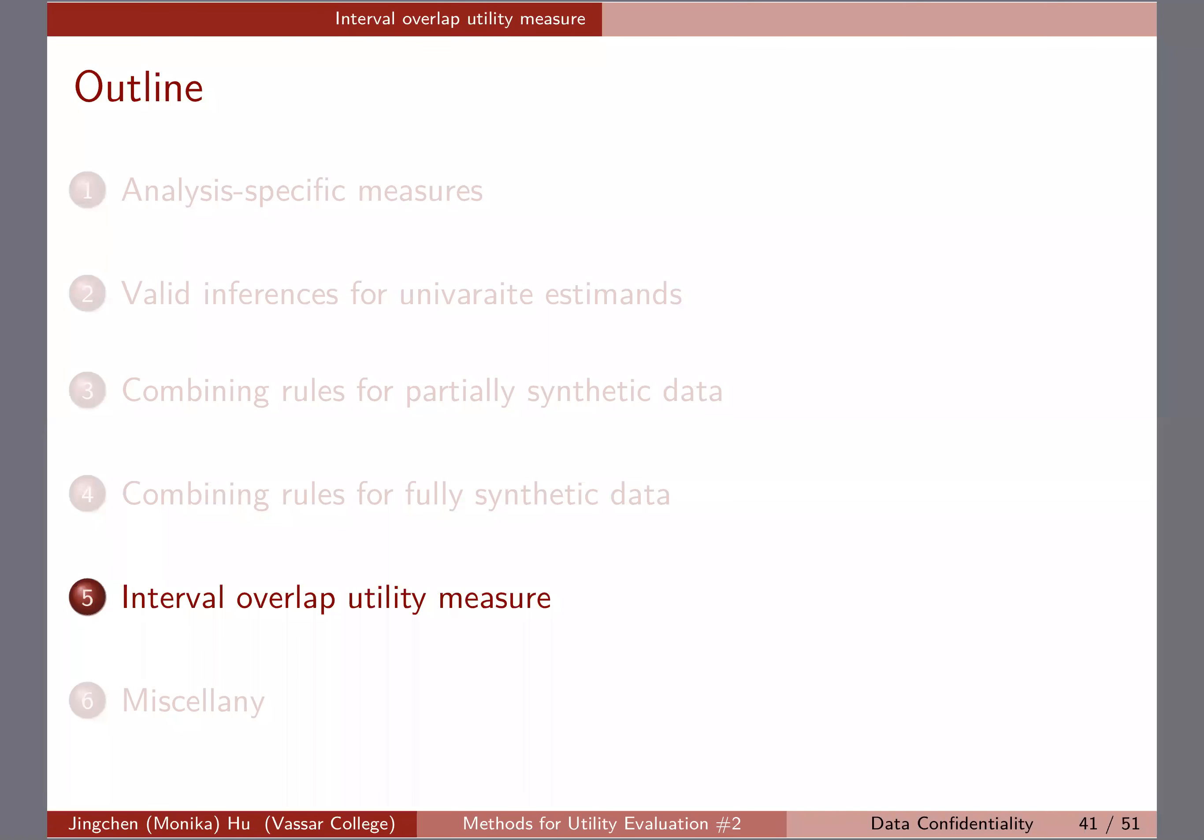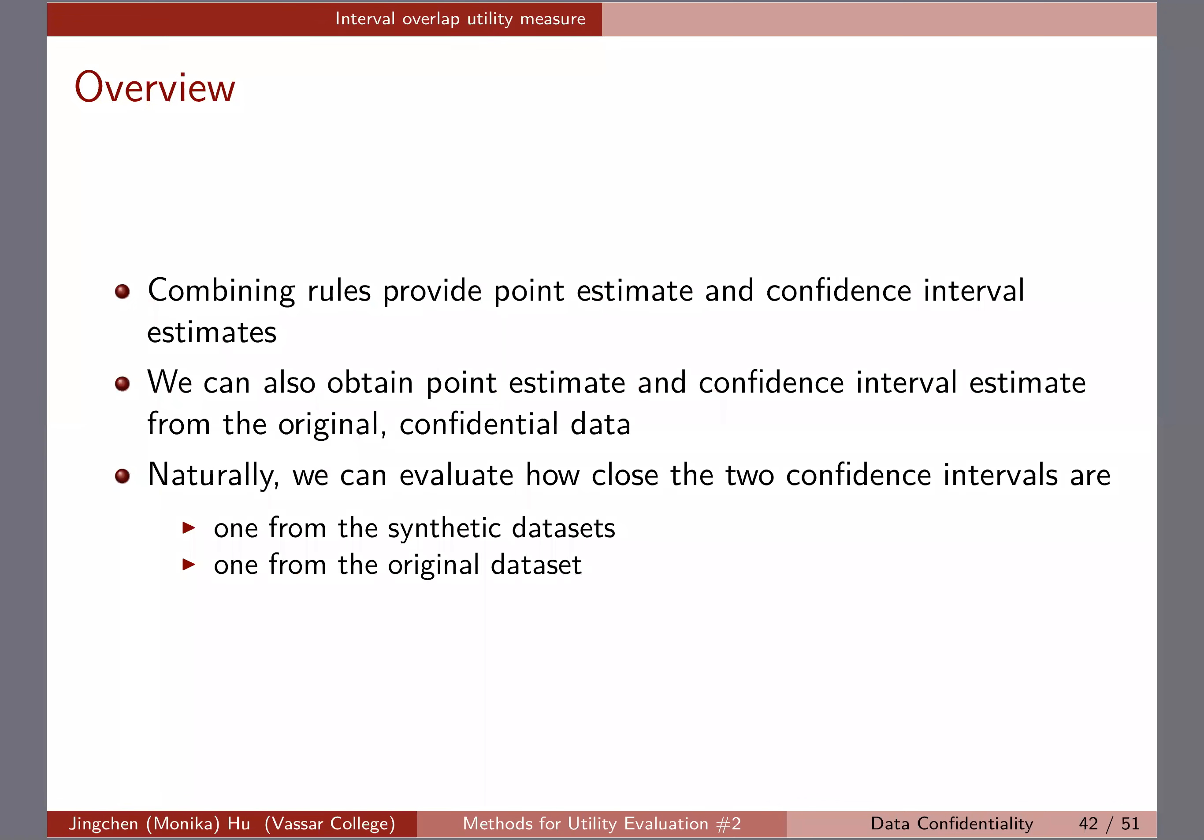I think many of you did this, and again, this is looking at getting a confidence interval from the original data and also from synthetic data based on the combining rules. So naturally, we want to compare how close those confidence intervals are. One way to do this as a utility measure is the interval overlap.